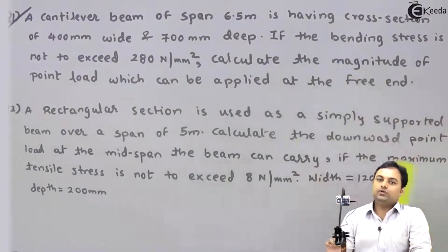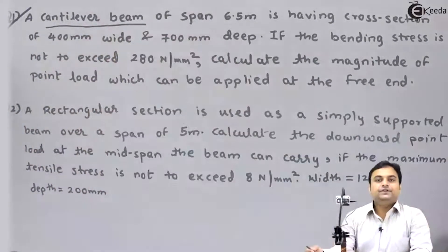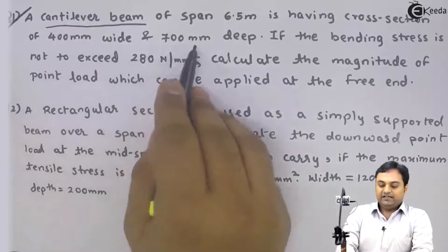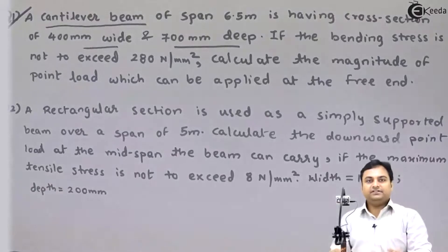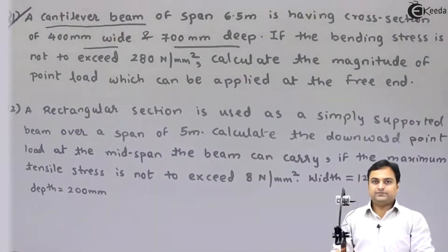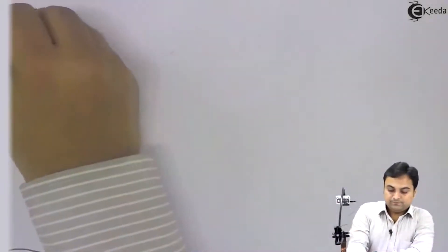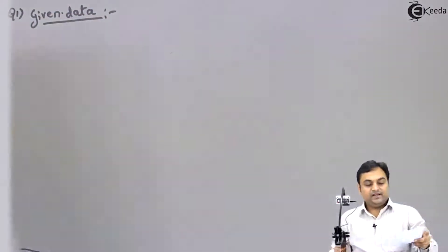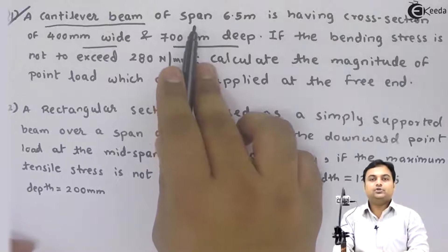The type of beam is a cantilever beam. This cantilever beam is having a cross section 400 mm wide and 700 mm deep, meaning it is a rectangular cross section. I will write the data for this problem and then we will be solving it step by step. Here I have a cantilever beam of span 6.5 meters — span means length of beam.